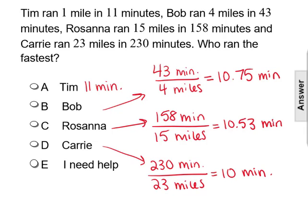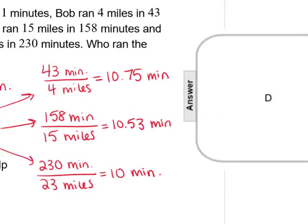So it took her 10 minutes to run 1 mile, which is the shortest time. So she's running the fastest, making our answer D, Carrie.